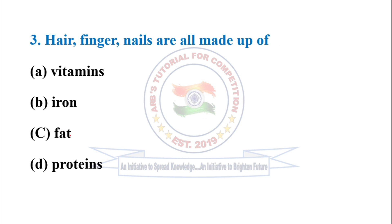Question number three: hair and finger nails are all made up of? The correct option is D — proteins.